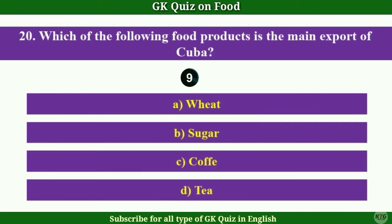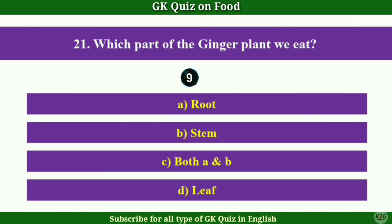Question No.20: Which of the following food products is the main export of Cuba? Answer B: Sugar.